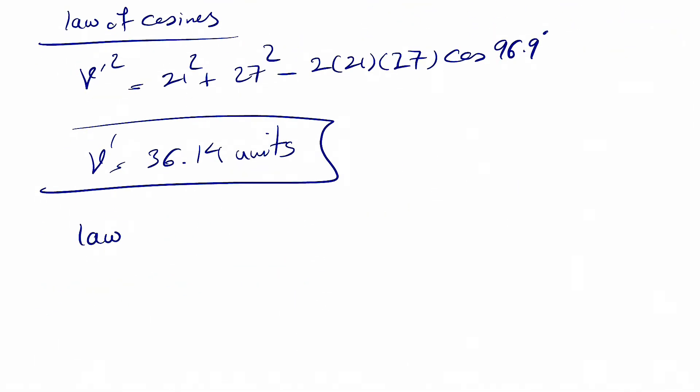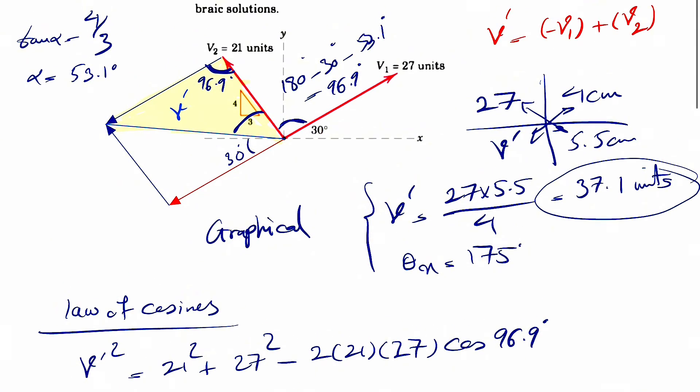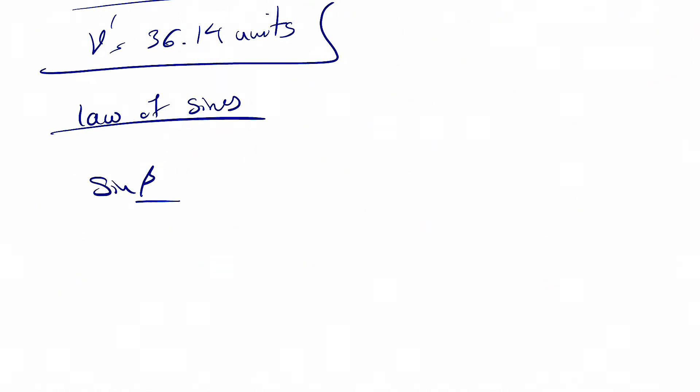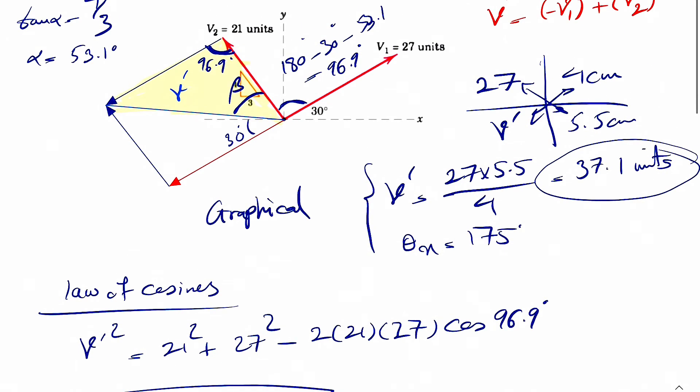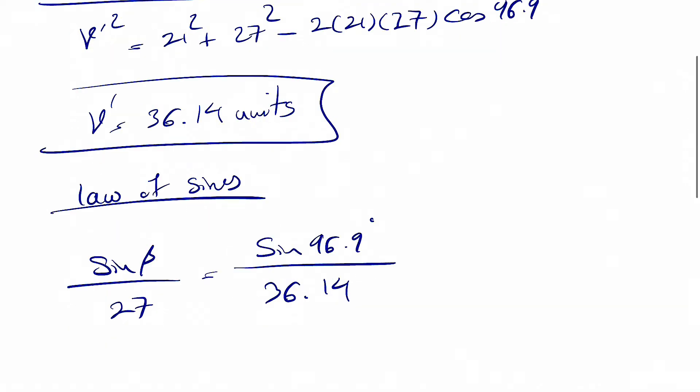And we're going to use the law of sines in order to find the angle beta in order to figure out what angle it makes with. So let's call this angle between V prime and our V2, beta. So we're going to have sine of beta over this side in front of that, which is V1, 27, is equal to sine of 96.9 over the V prime, which was 36.14.